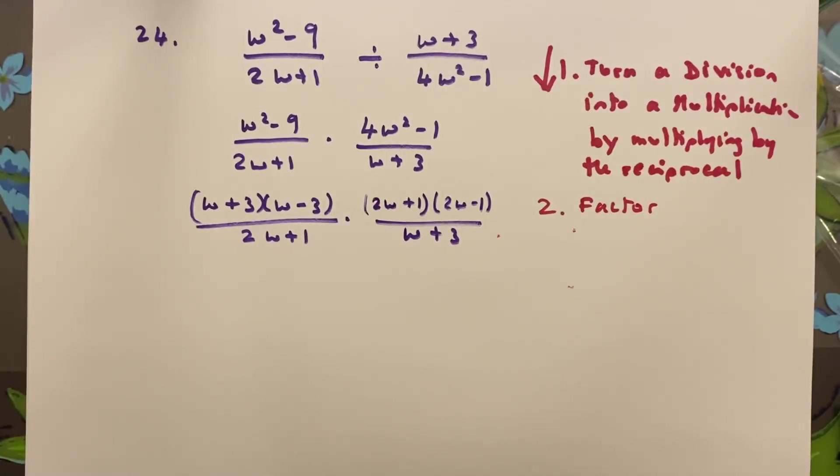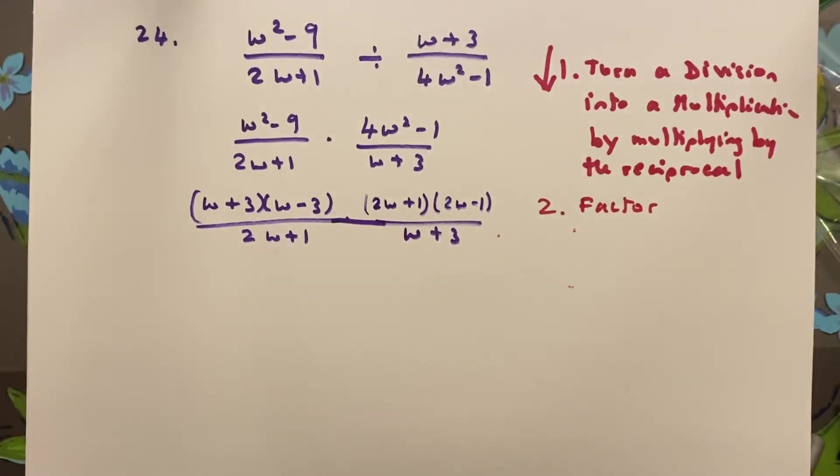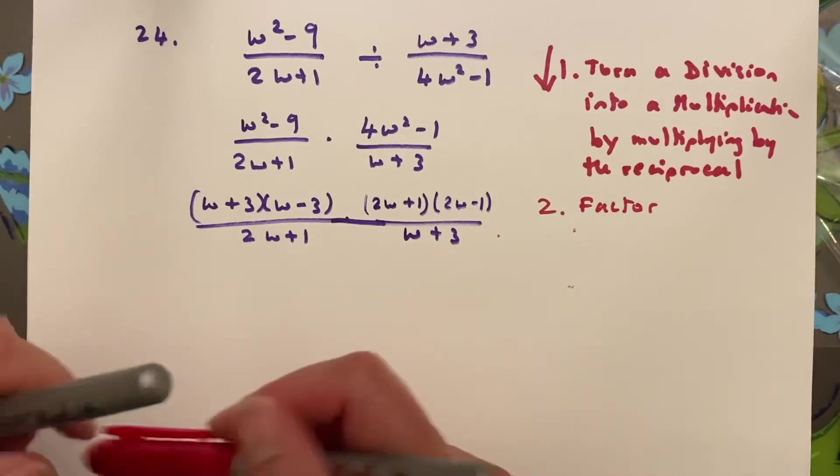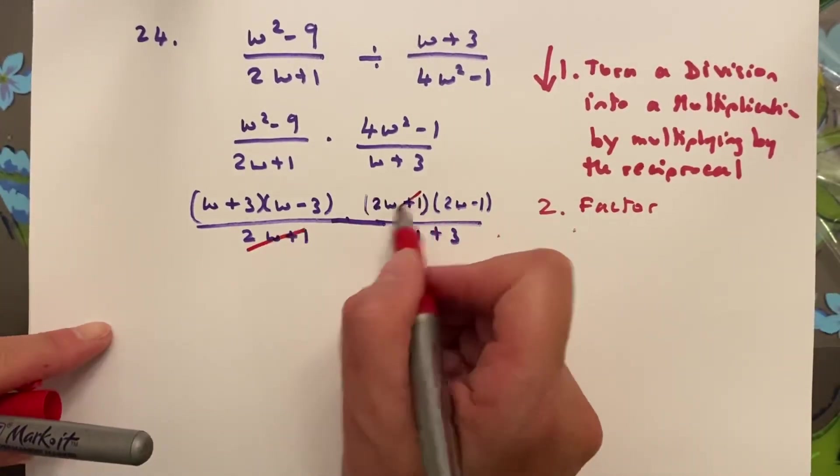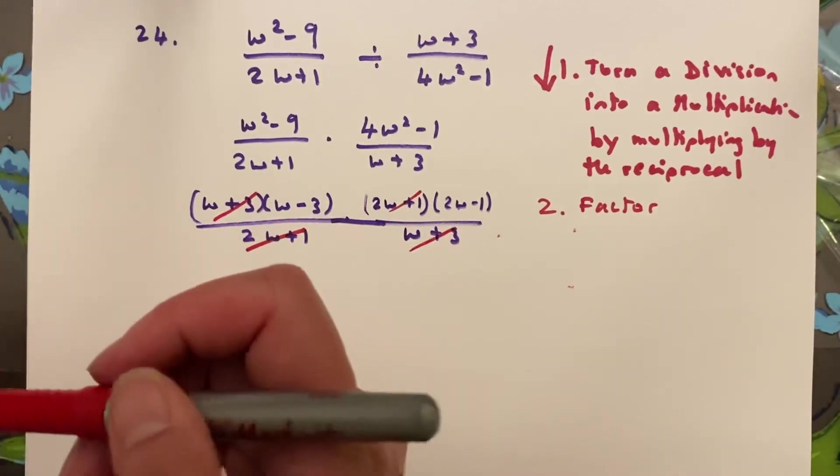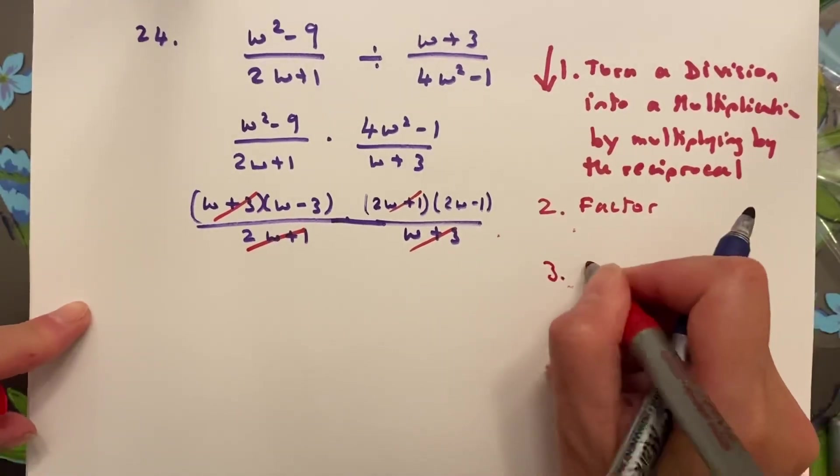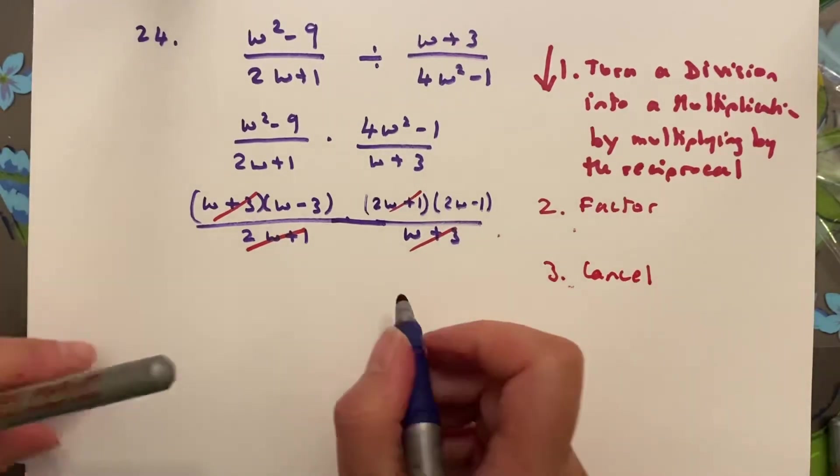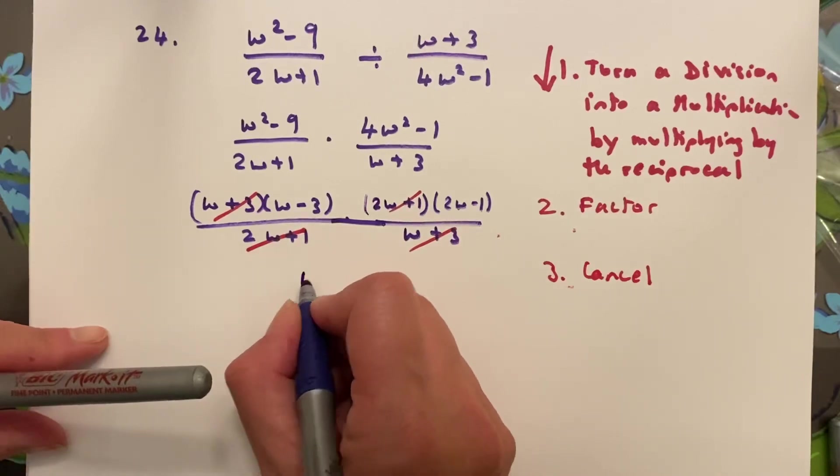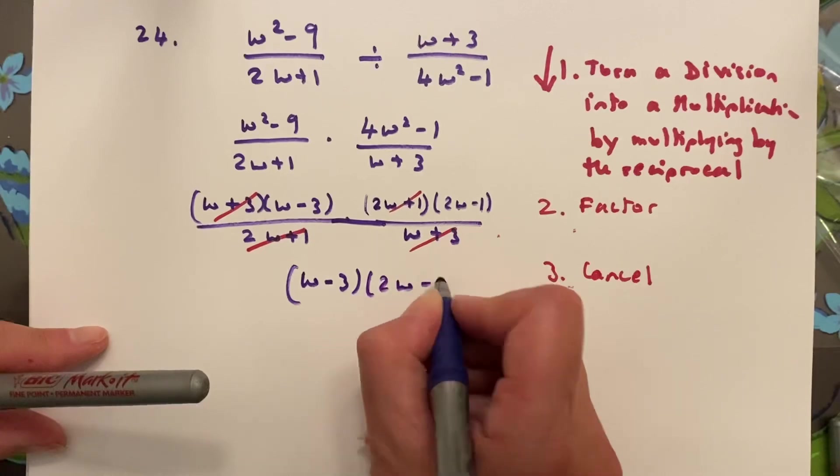Now I'm going to look at all of this, join it together, and see what I can cancel. What I can see - I can cancel a 2w plus 1 and I can cancel a w plus 3. And when I'm finished canceling, I'm left with just numerators, and then w minus 3 times 2w minus 1, and that is my answer.